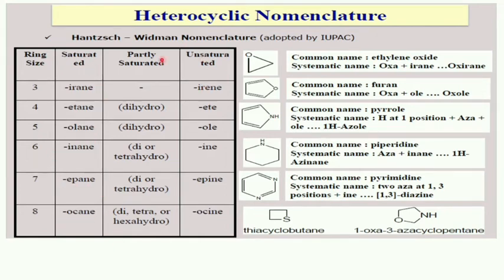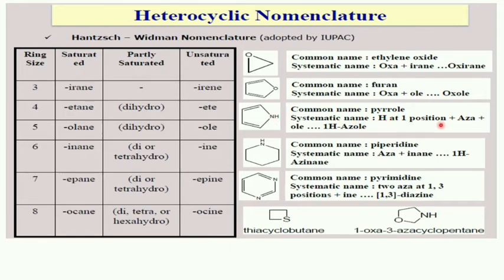So rings can be saturated, partially saturated, or unsaturated. The common name ethylene oxide has the systematic name oxirane — 'oxa' indicating oxygen and 'irane' indicating the saturated 3-membered ring system. Pyrrole is the trivial name for the 5-membered ring with one nitrogen atom. The systematic name is 1H-azole: 'H' at the first position, 'aza' indicating nitrogen, and 'ole' indicating the unsaturated 5-membered ring.